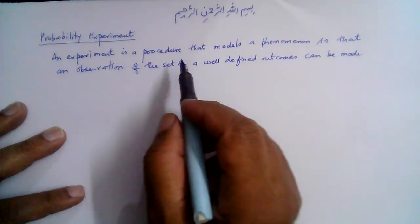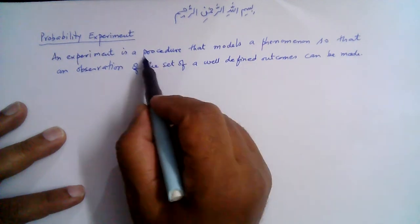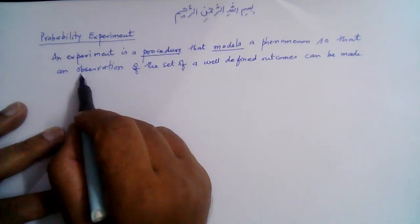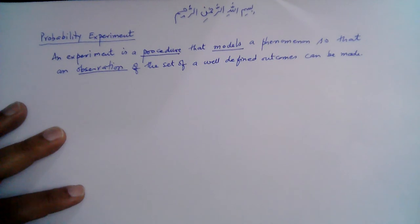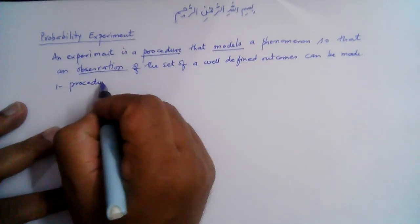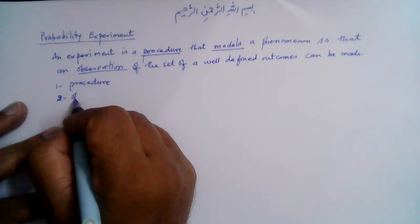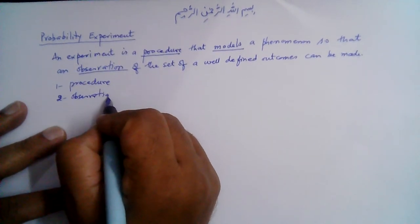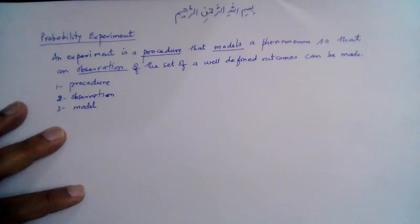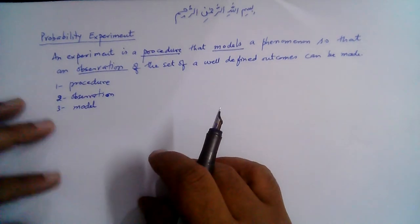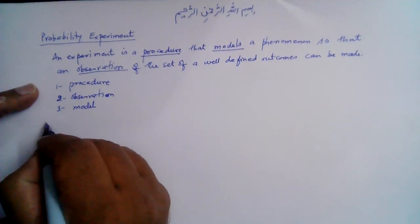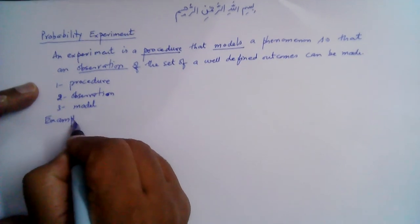There are three main words we need to emphasize here: one is the procedure, it models a phenomenon, and we make an observation from the outcomes. All these parameters are important in an experiment. Let's explain with the help of some examples.